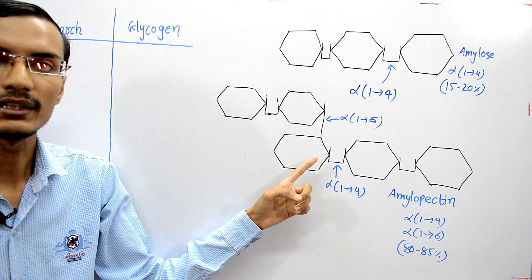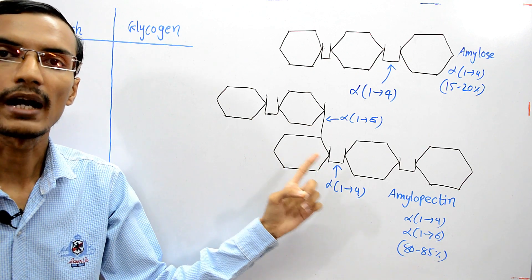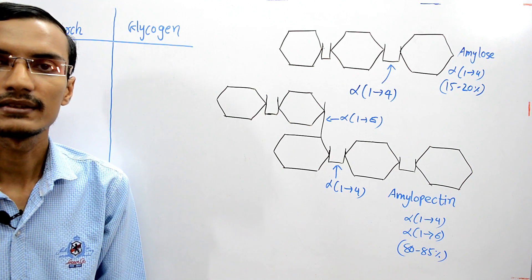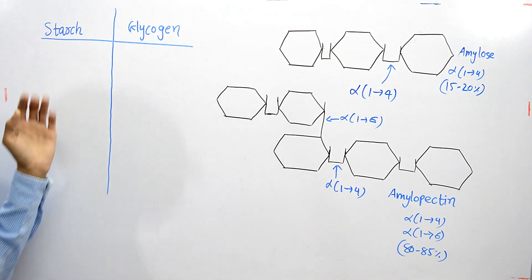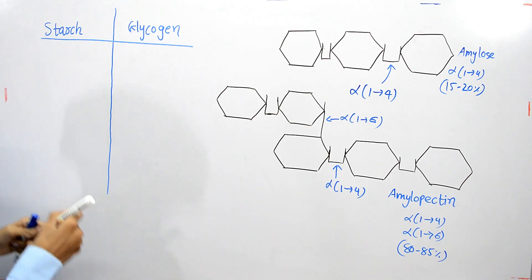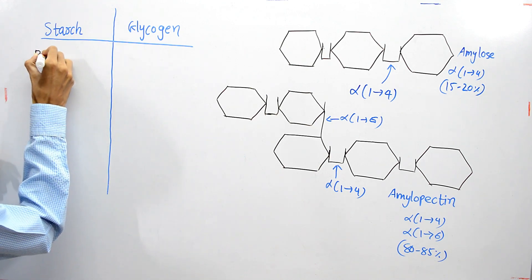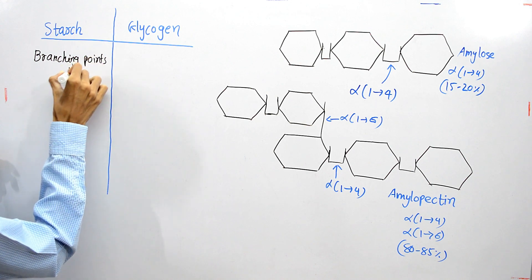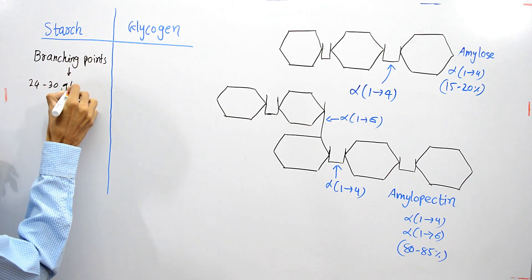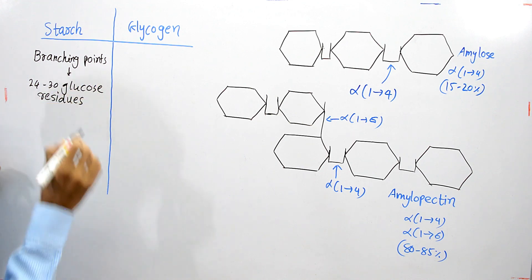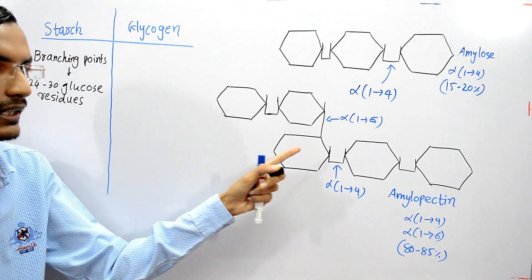Now let's see the differences between starch and glycogen. In the structure of starch, if we talk about amylopectin, the branching points occur every 24 to 30 glucose residues.